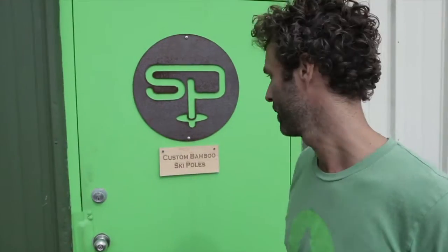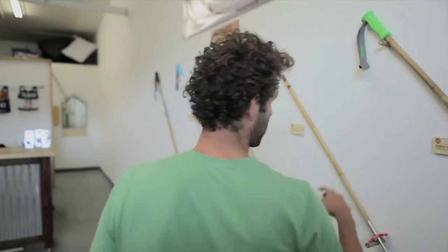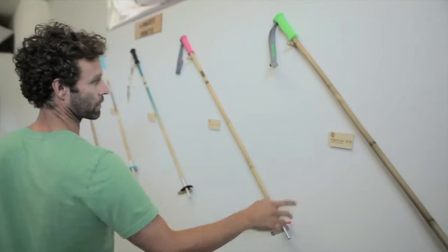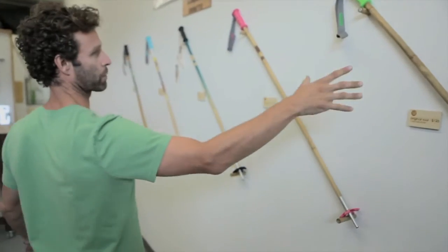This is the Soul shop. Custom bamboo poles right there. Come on in. These are the different models we have. We start with the original Soul and add customization from there.